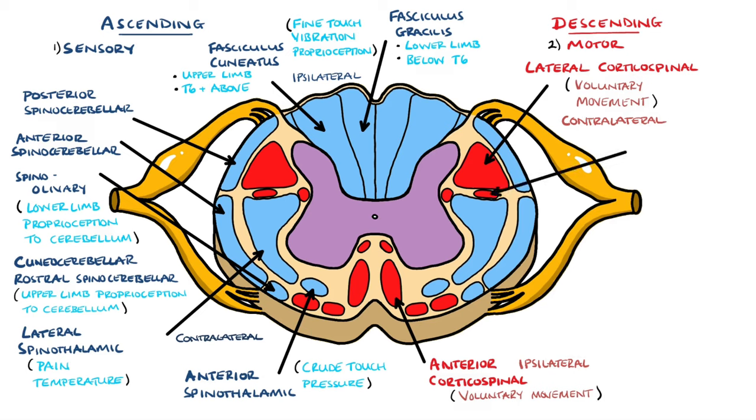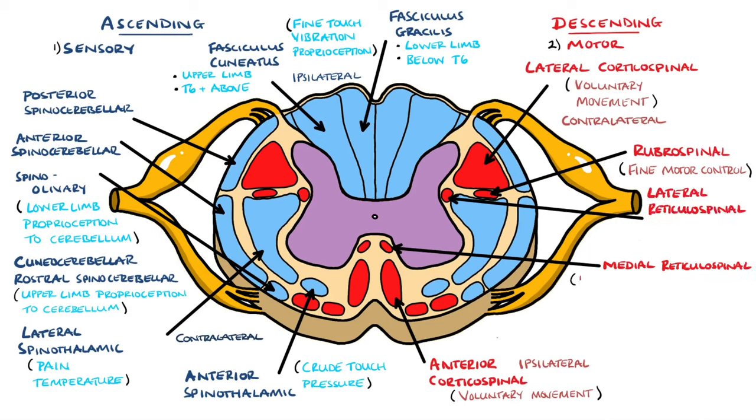This then leaves the four extrapyramidal tracts. First is the rubrospinal tract, providing contralateral innervation involved in fine motor control. Then we have the reticulospinal tracts, which include medial reticulospinal tract, involved in facilitation of voluntary muscle contraction and increasing muscle tone...